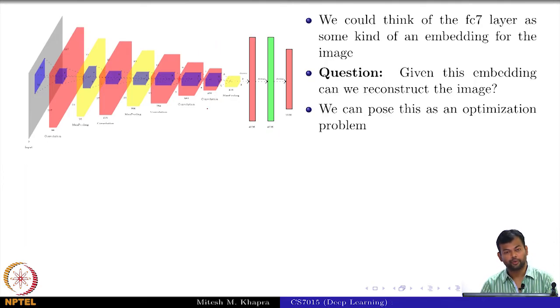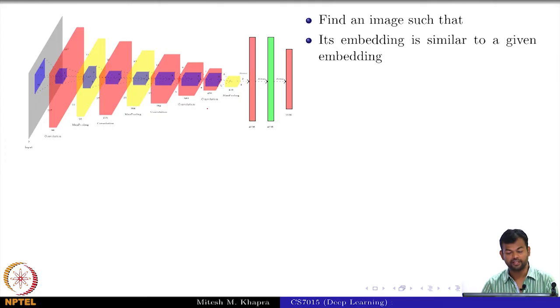Let's see if we can do this. Find an image—this is the optimization problem that I am interested in. Find an image such that its embedding is similar to a given embedding. What do I mean by that is?